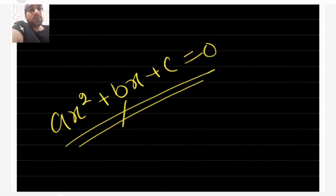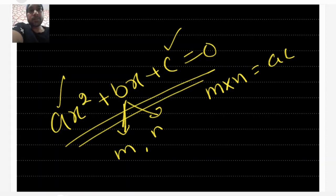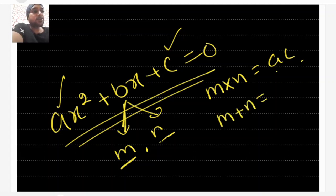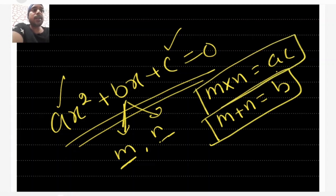Now we have to split b into two parts, say m and n, in such a way that m × n should be equal to a × c, where a is the coefficient of x² and c is the constant term. The product of m and n should equal a × c, and the sum of m and n should equal b.